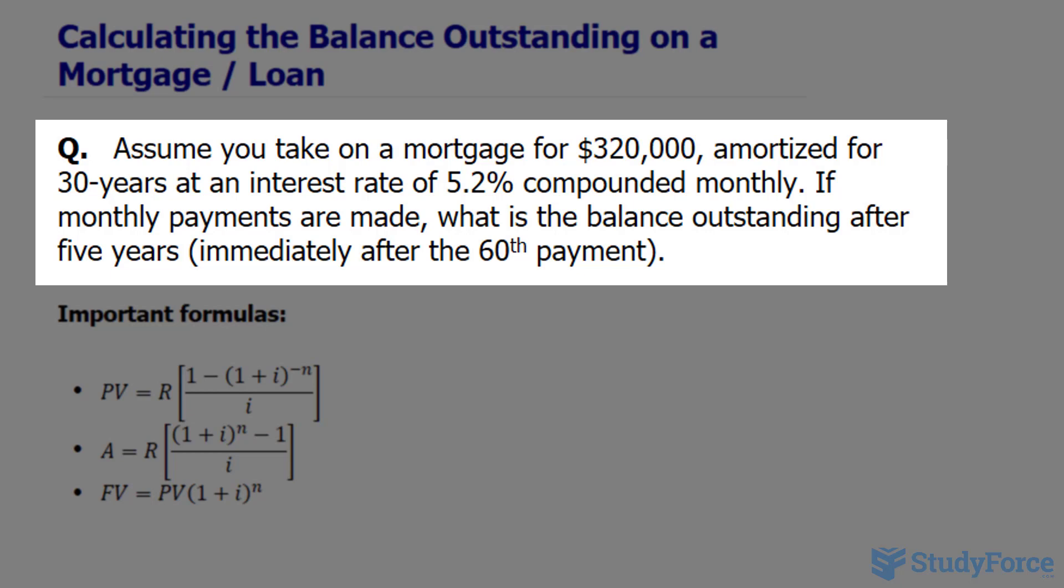If monthly payments are made, what is the balance outstanding after 5 years, that is, immediately after the 60th payment?